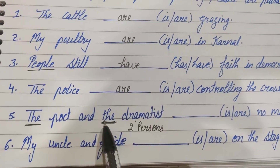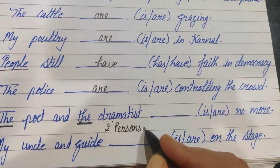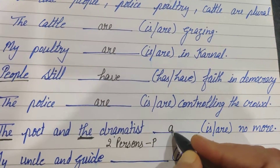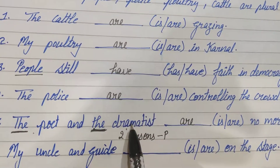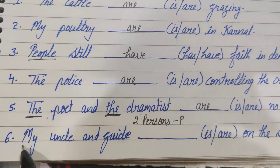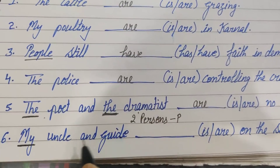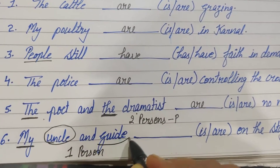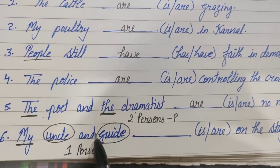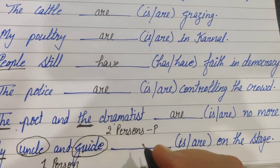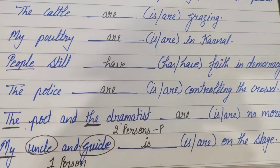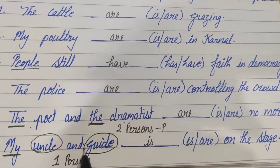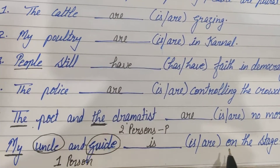Rule 12: Different determiners are used with nouns — if they represent two persons, the verb will be plural. So 'the poet and the dramatist' — are no more — because poet is a different person and dramatist is a different person. But 'my uncle and guide' represents only one person, so: My uncle and guide is on the stage. However, if we say 'my uncle and my guide', then they represent two persons, so: My uncle and my guide are on this stage.